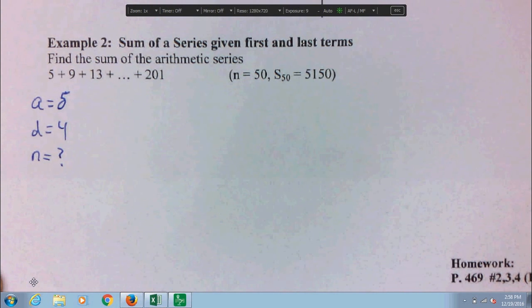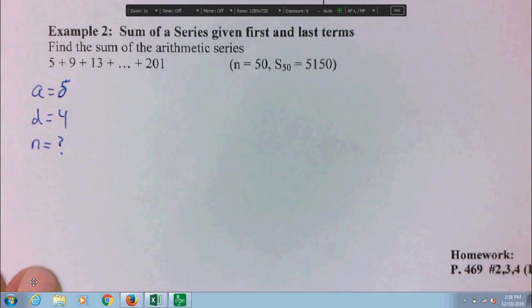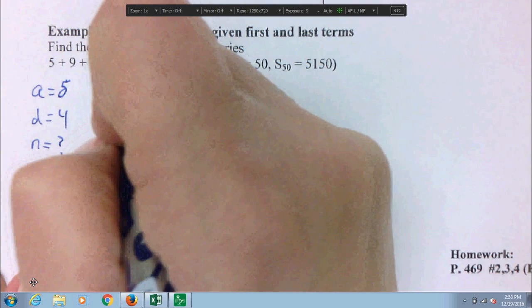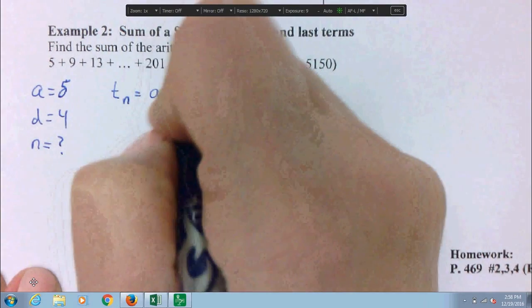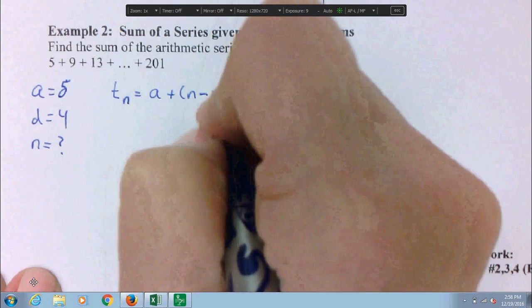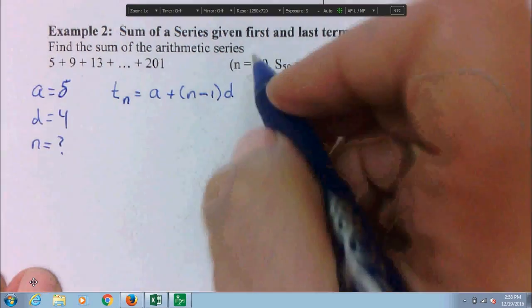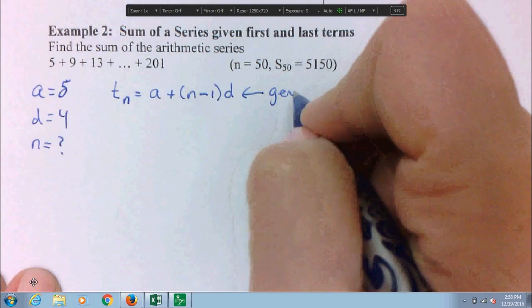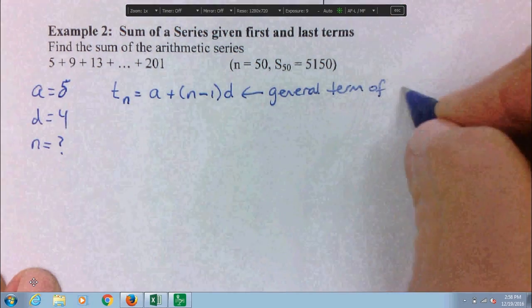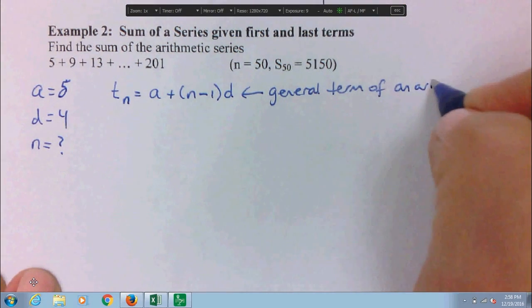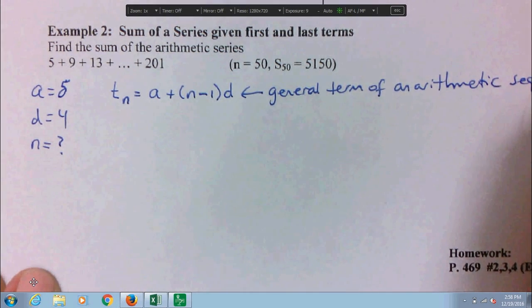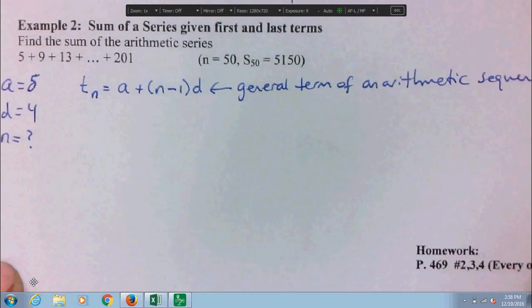Now, if we knew a, d, and n, then we can just sub everything into the Sn formula and get the sum of those terms. But we don't know how many terms there are. So what we did when it was the sequences lesson is we said the following. Here is the formula for the general term of an arithmetic sequence. Sequence, not series. So I'm just going to write over here, general term of an arithmetic sequence.